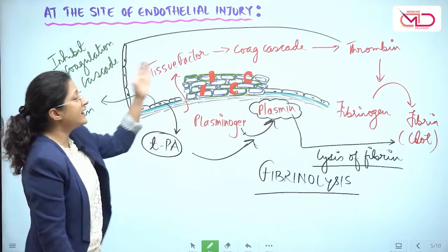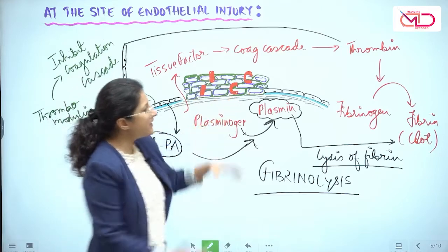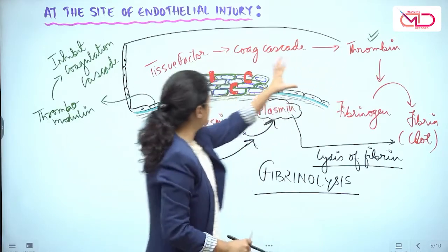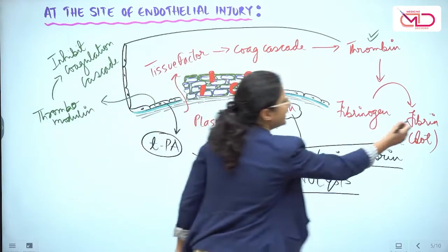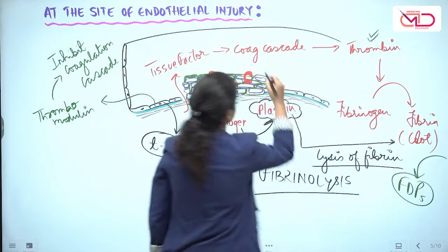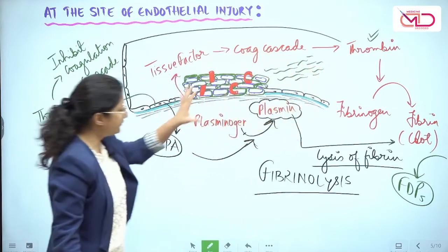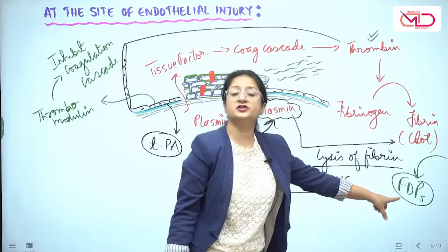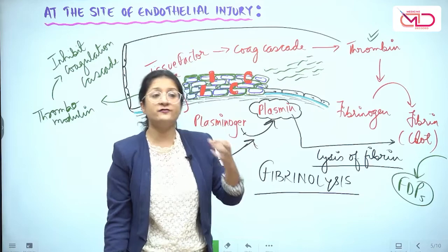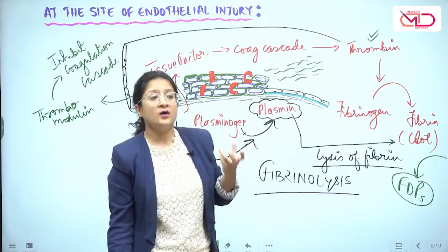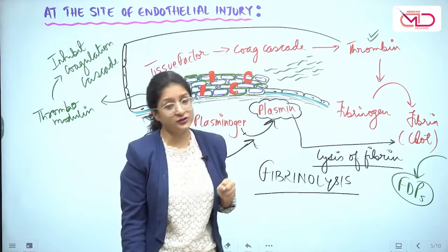Another important principle: whenever there is excess thrombosis, it will also trigger excess fibrinolysis and excess fibrinolytic activity, ultimately leading to breakdown of fibrin into fibrin degradation products. Whenever there is excess thrombosis, excess fibrinolysis is triggered and excess fibrin degradation products can be detected in the bloodstream. So when you want to check for excess thrombosis in the body, you can check for excess fibrin degradation products — like when checking for disseminated intravascular coagulation, you check D-dimer as well as fibrin degradation products.